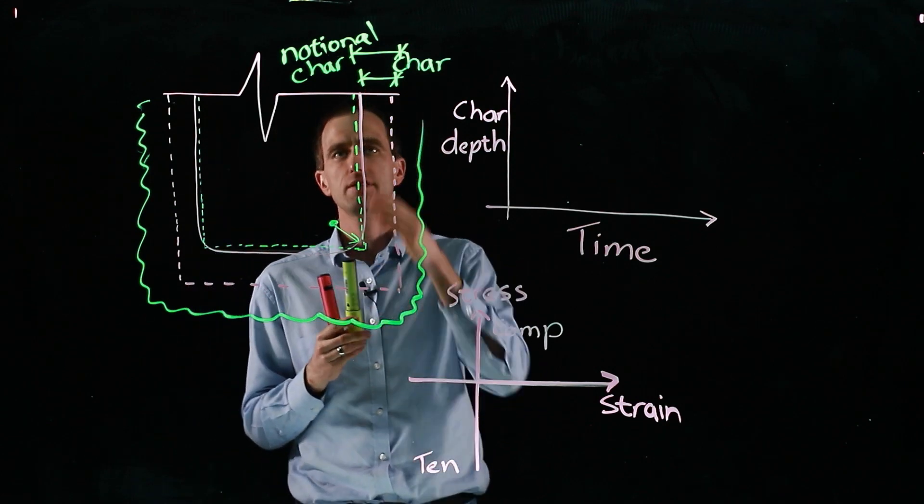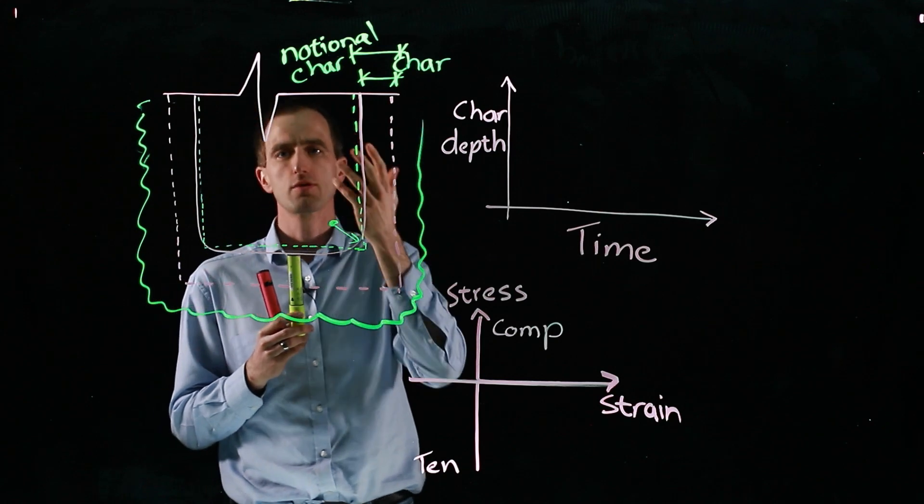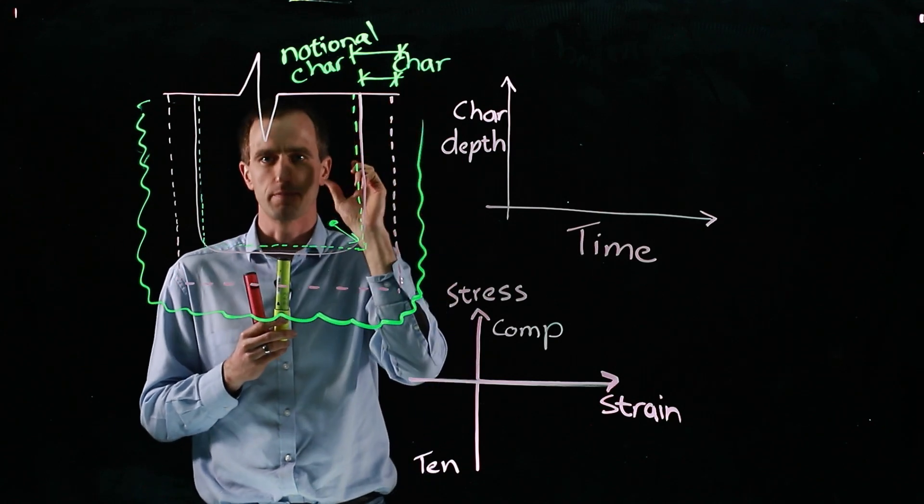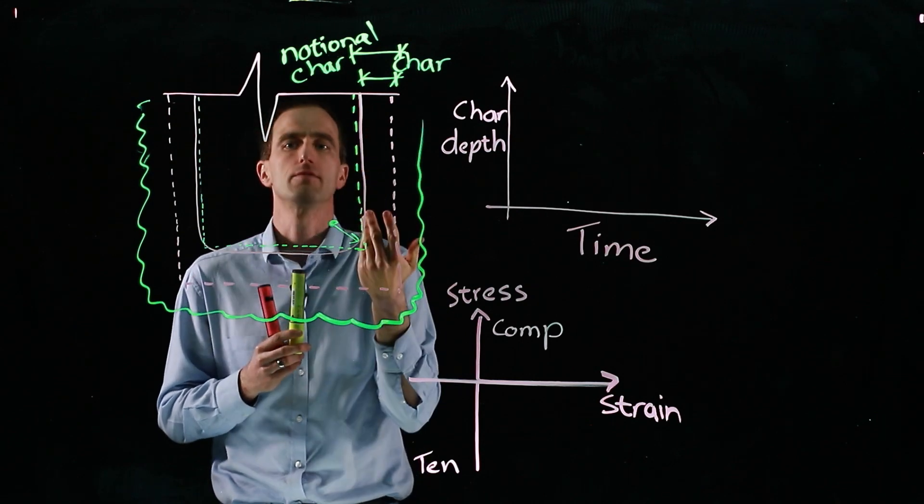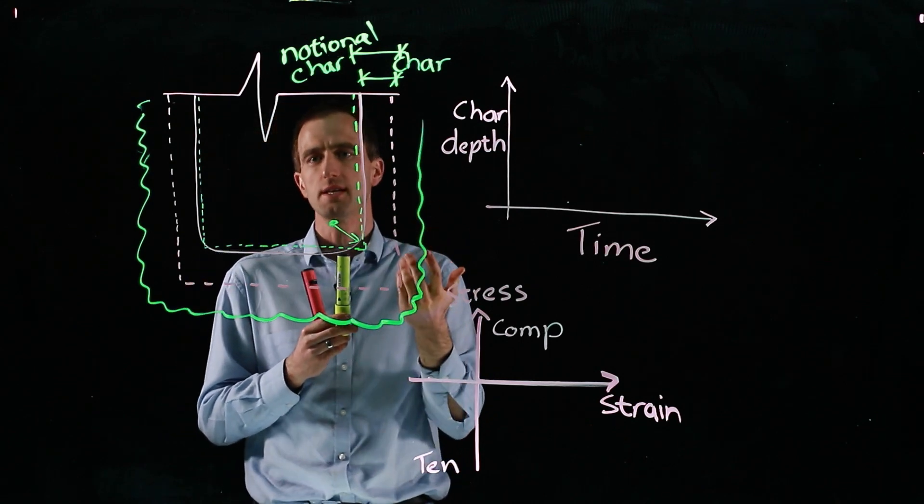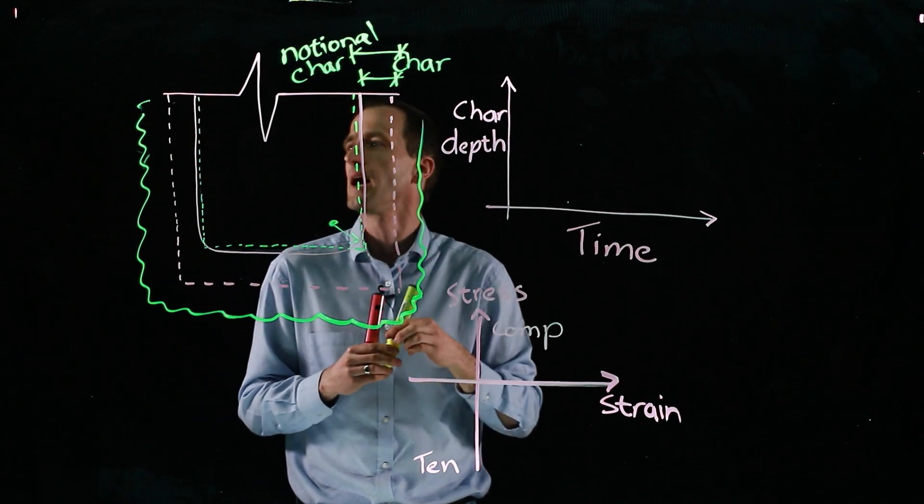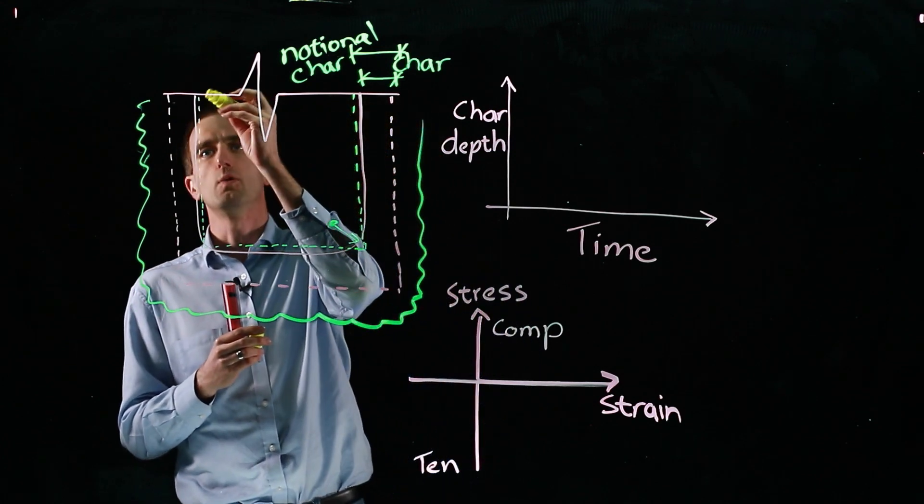But ahead of the charring front, there's also preheating because char layer is a solid black material, but there's a preheating of the material ahead of the char face. So it'll also weaken the material further. So we can't rely on that material as well.